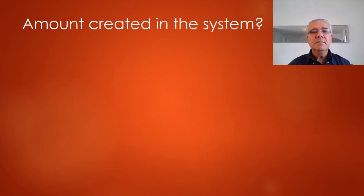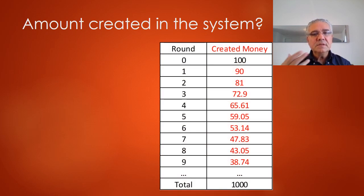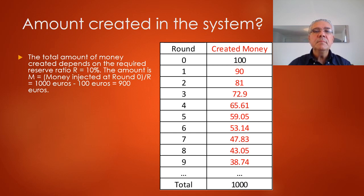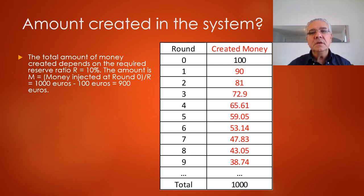If we look at the amount of money created across the system, in aggregate there is actually new money being created. The total amount depends on the required reserve ratio of 10 percent. Take the new amount injected into the banking system — 100 euros — and divide it by the required reserve ratio: 100 divided by 10 percent equals 1000. Since the 100 euros was already in the system, the banking system has actually created 900 euros of new money.